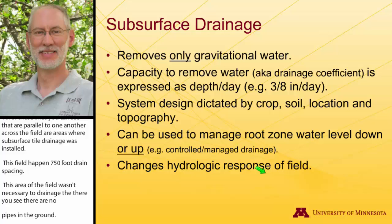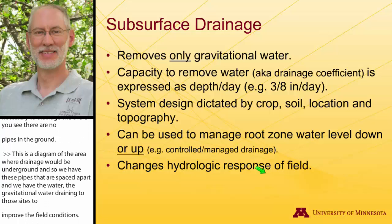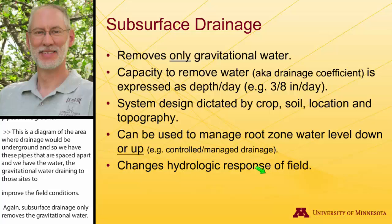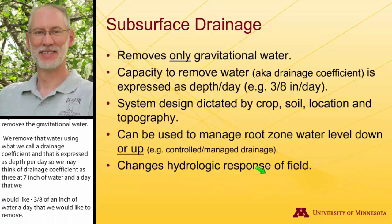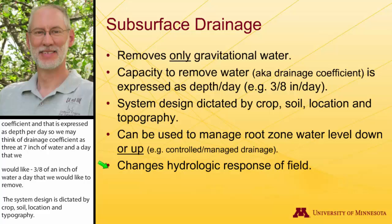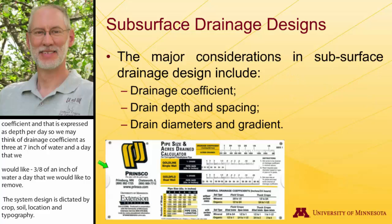Subsurface drainage only removes that gravitational water. We remove that water using what we call a drainage coefficient, expressed as a depth per day — for example, three-eighths of an inch of water per day that we would like to remove. These systems are primarily designed with consideration for crops, soil types, locations, and topography. We can manage the water in some cases up or down in these fields, and the subsurface drainage and surface drainage can affect the hydrologic response of those fields.